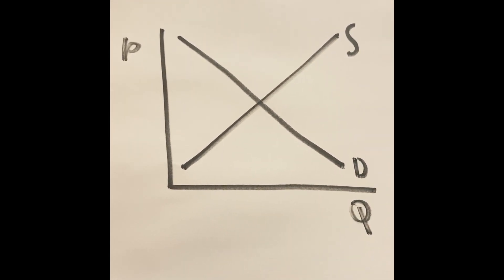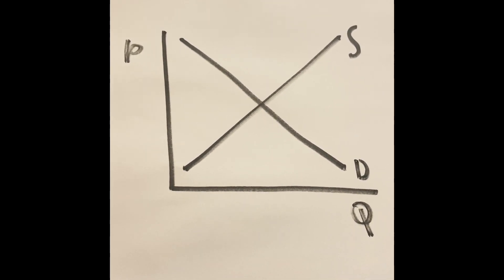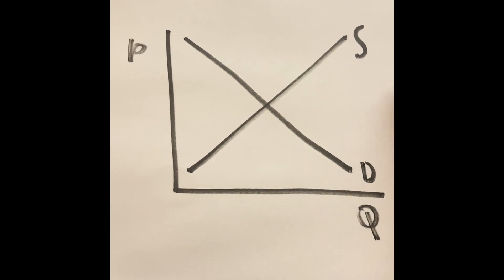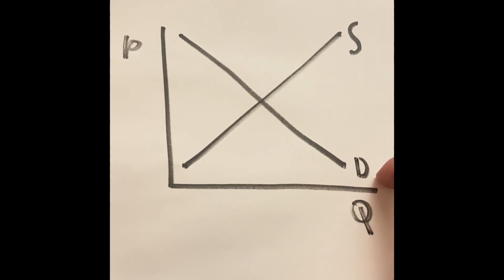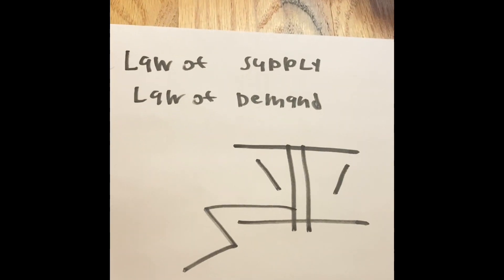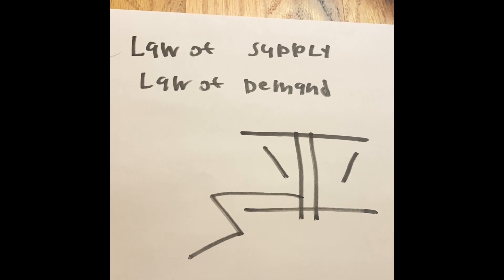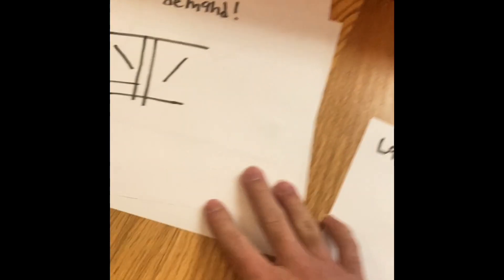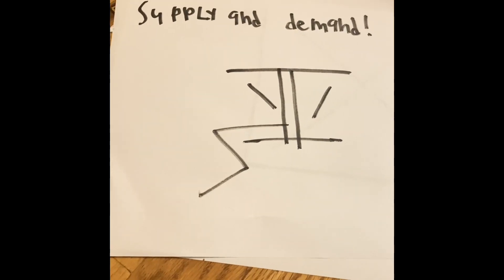Before we start learning about the graph, because if we do, it may be confusing. But the reason why we're talking about S and D is there are two definitions that we have to learn about before we learn this. We have to learn about the law of supply and the law of demand. If we only talk about supply and demand, it doesn't talk about the big picture.